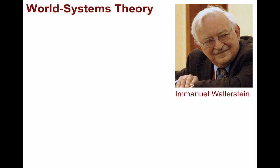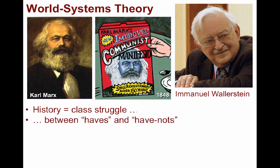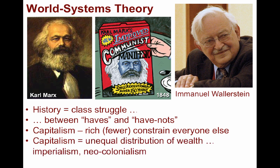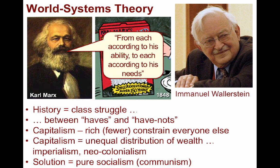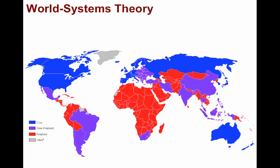Emanuel Wallerstein, an American social scientist, was influenced by the writings of Karl Marx, author of the Communist Manifesto. Marx contended that the history of the world could be boiled down to class struggle between the haves and the have-nots. Under capitalism, the wealthy few would not willingly share their wealth and power, thus constraining the development of everyone else. Capitalism led to the unequal distribution of wealth and things like imperialism and neocolonialism. Marx's solution would be a world of pure socialism — communism — where no one possesses property, everyone contributes according to their ability, and receives according to their needs. Wallerstein, influenced by Marx and dependency theory, viewed the capitalist world that Rostow championed as the main hindrance to the development of poorer regions.